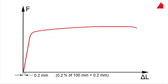In the force-elongation diagram, a straight line parallel to the elastic line is drawn through the offset point of 0.2 millimeters of elongation. The force at the intersection point of the offset line with the force-elongation diagram is designated as Fp0.2. This is the force that causes a plastic strain of 0.2 percent.